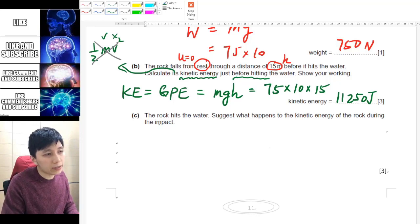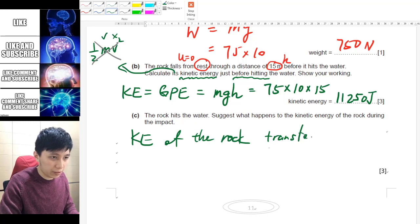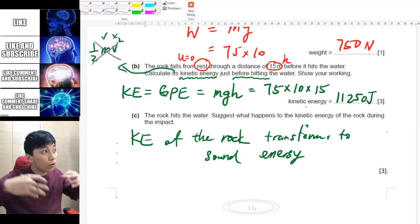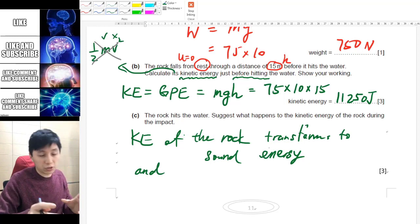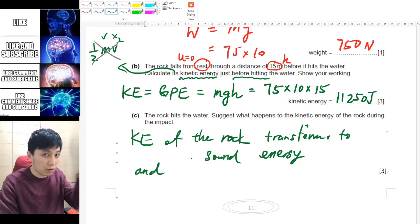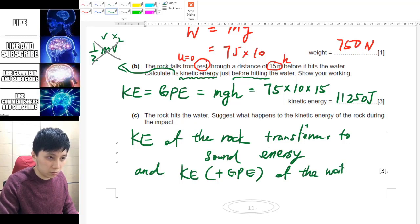And part c, it asks you when the rock hits the water, like I said, suggest what happened to KE of the rock during the impact. So you really have to think about different types of energy that you learned at the very beginning of this chapter. So what you can say is the KE of the rock, remember to specify the object, transforms into something else. Of course, when you throw something in the water, you should hear sound, so sound energy. And you can also imagine when these things got thrown into water, there will be water splash, right. And therefore that water splash, you have to think about what kind of energy it is. And the movement of the water, of course, is kinetic, and also it may go up as well, so I would say mainly, I would say KE, and if you want to, you can say GPE also, of the water splash.